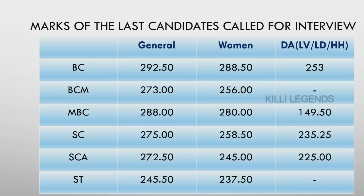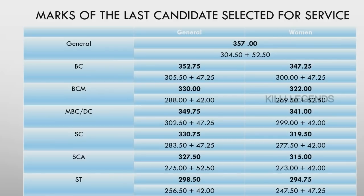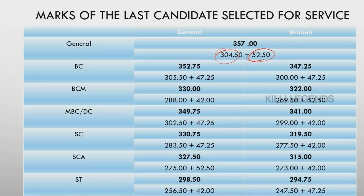If you look at the certificate upload, you will have a list. SEA, RST — whatever category it may be — 387 marks. You are in general category. If you look at the individual marks at the bottom, they are individual marks — 52.5 as interview marks.